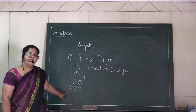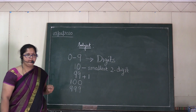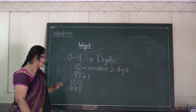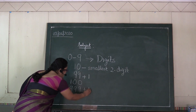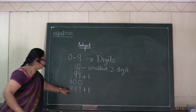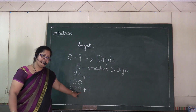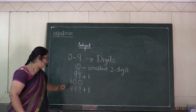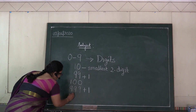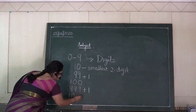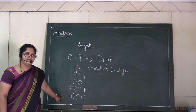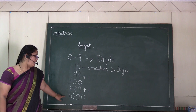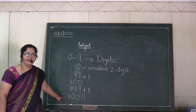In the same way, can you guess the smallest four-digit number? Very simple. Add one to nine hundred ninety-nine. What will you get? One, zero, zero, zero. Which number is this? Thousand, or one thousand.